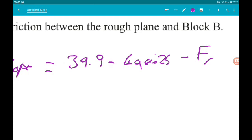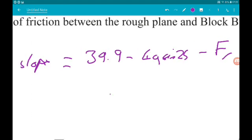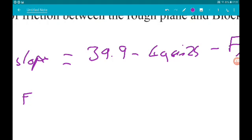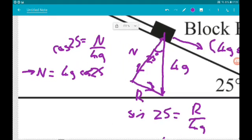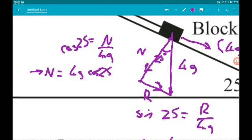Now, because we know that the block is on the point of sliding up the slope, that means then that friction is some quantity, so the coefficient of friction, so μ, times the normal reaction force. So this is μ times 4g cos 25.